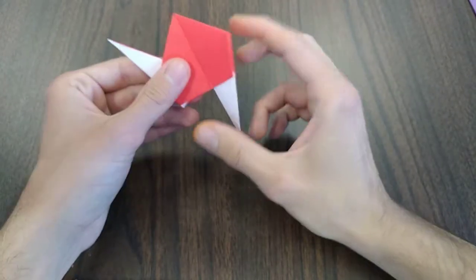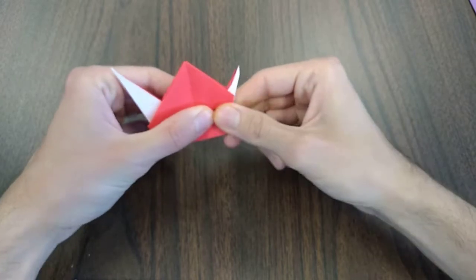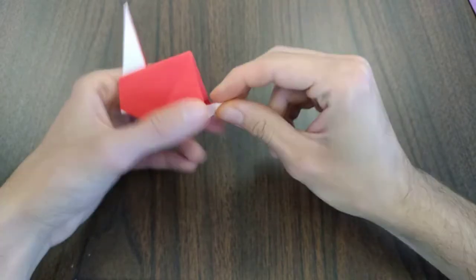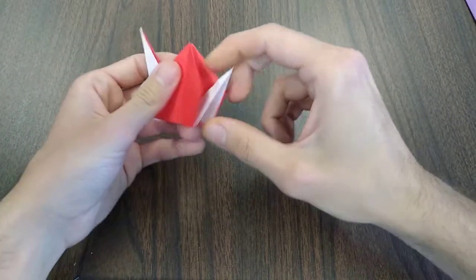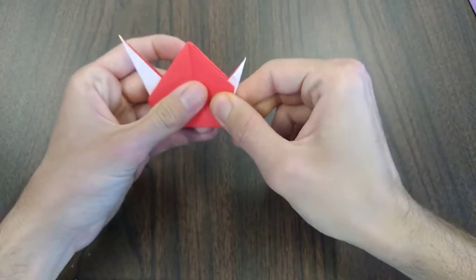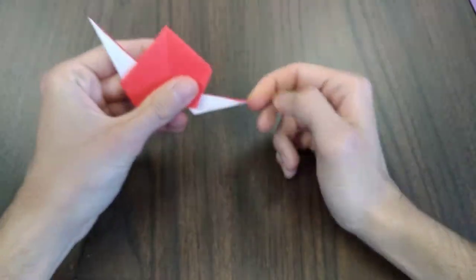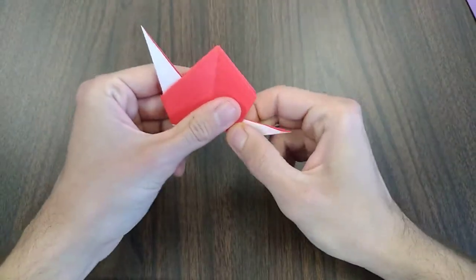We're going to repeat the process on the other side. We set it like this, and we just folded it up. So since this is the tail, I'm going to pull it further down so it looks more like a tail.